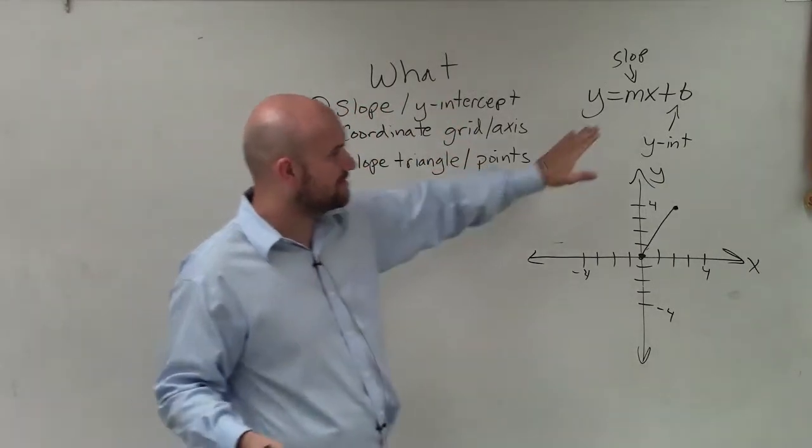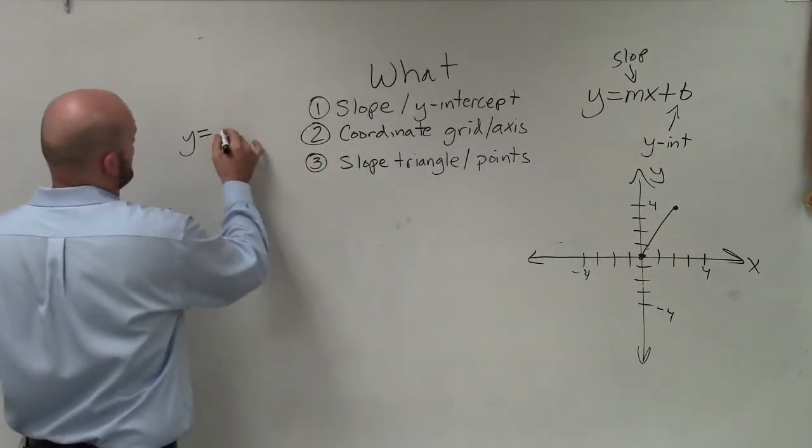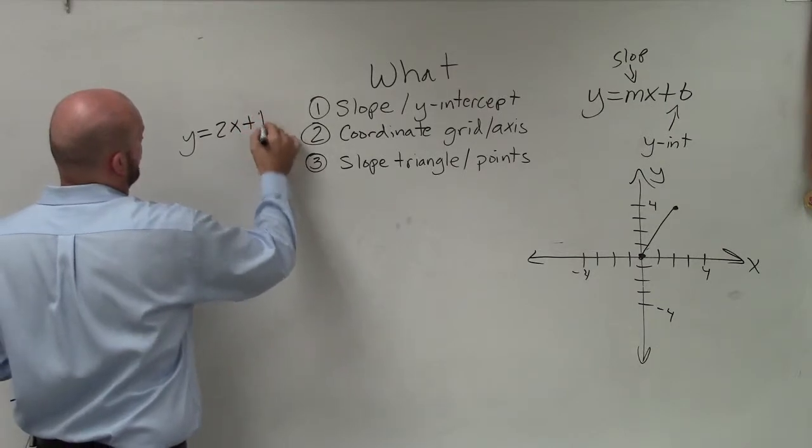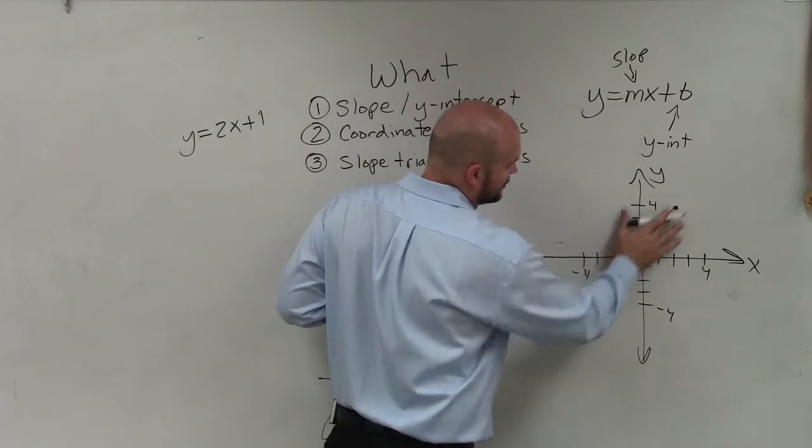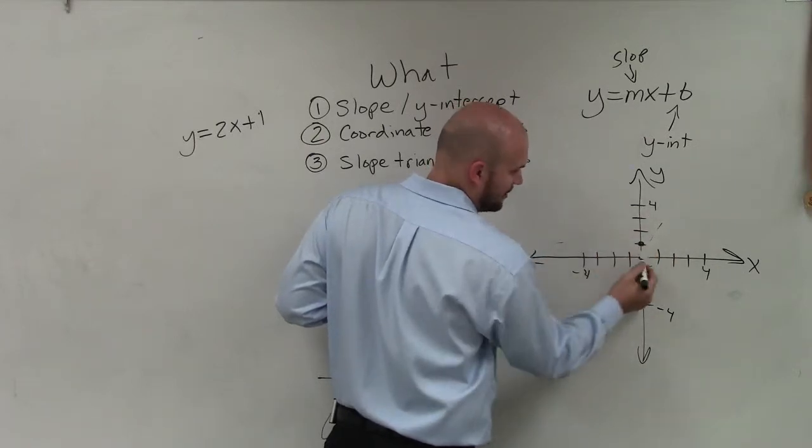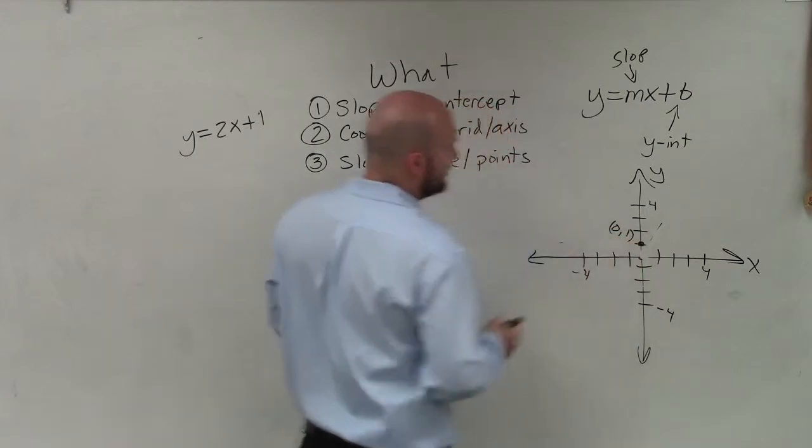Remember, the y-intercept is a point. Let's say our equation is y equals 2x plus 1. That means my graph is going to cross at 1. It has the coordinate point of 0 comma 1.